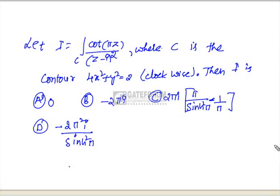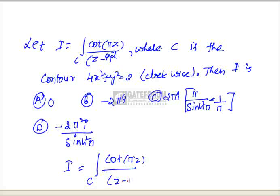In the next problem, I is given as the integral over contour C of π·cot(πz) divided by (z minus i)² dz, where C is the contour 4x² plus y² equals 2 in the clockwise direction, and we have to find the value of I.